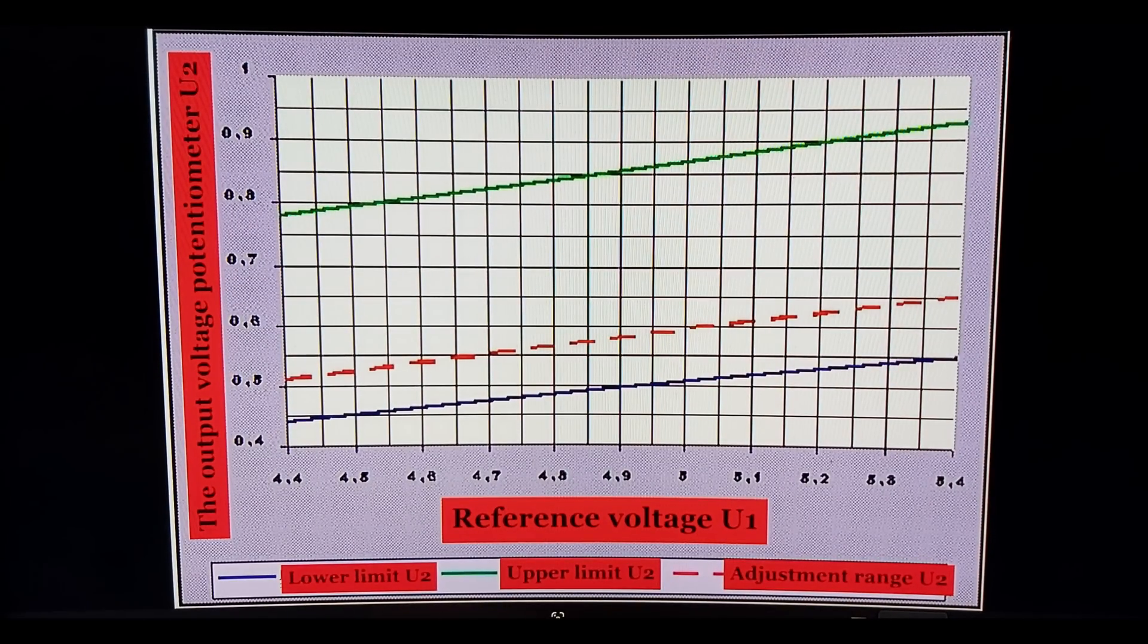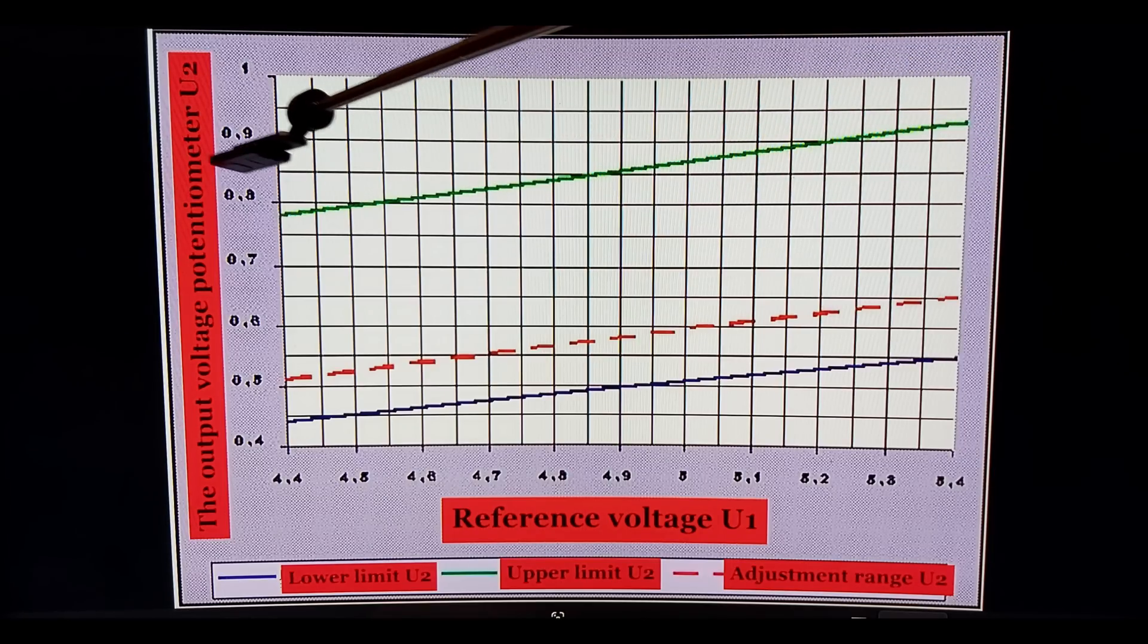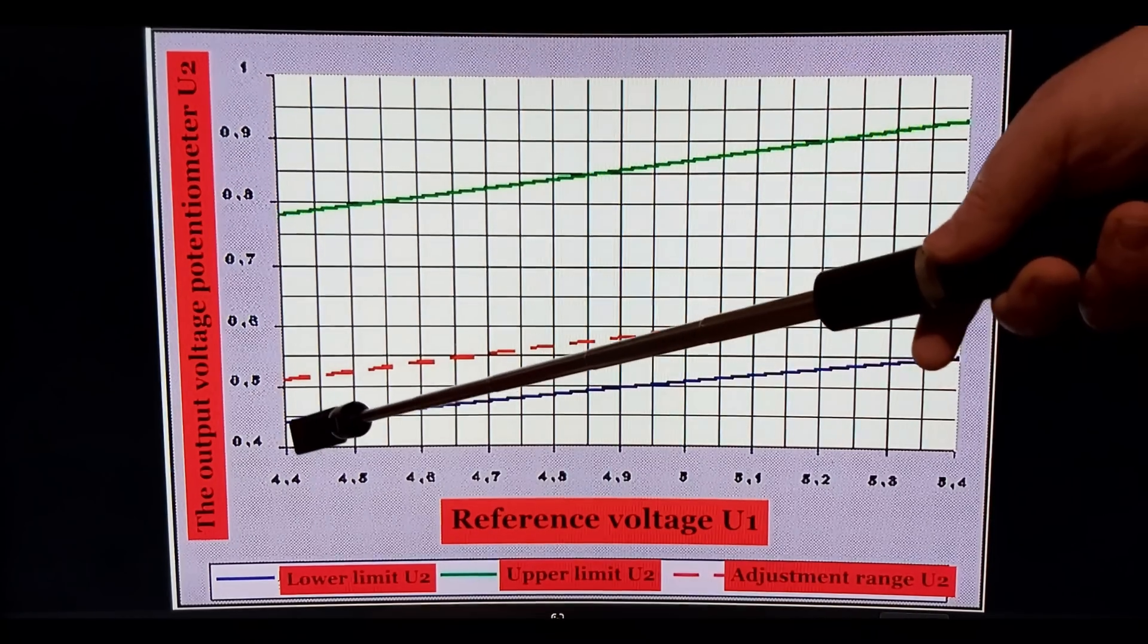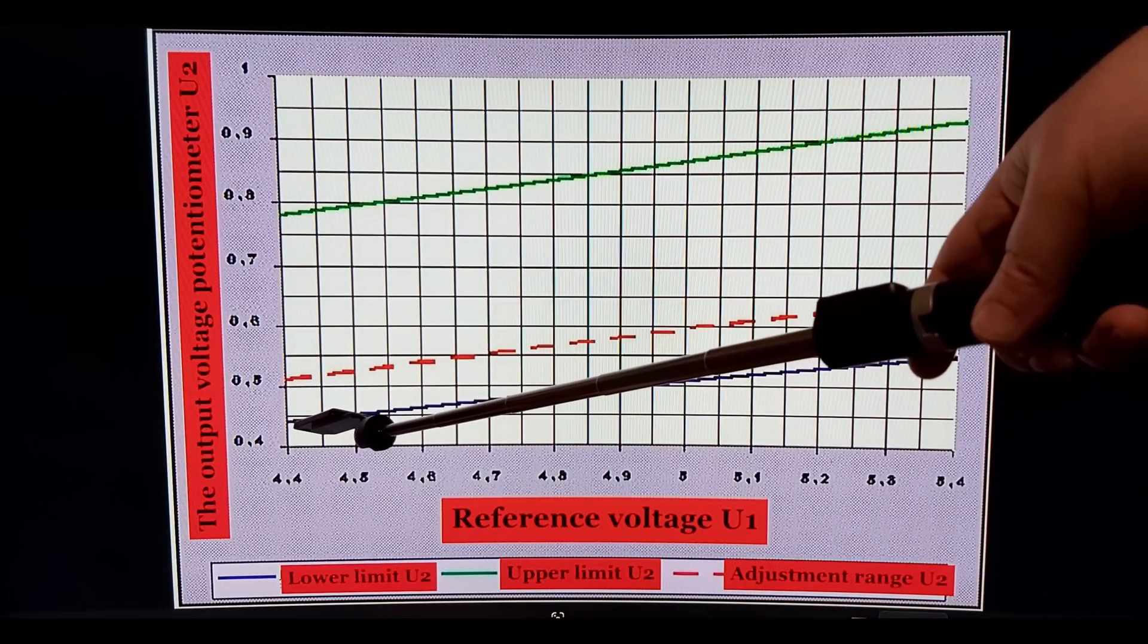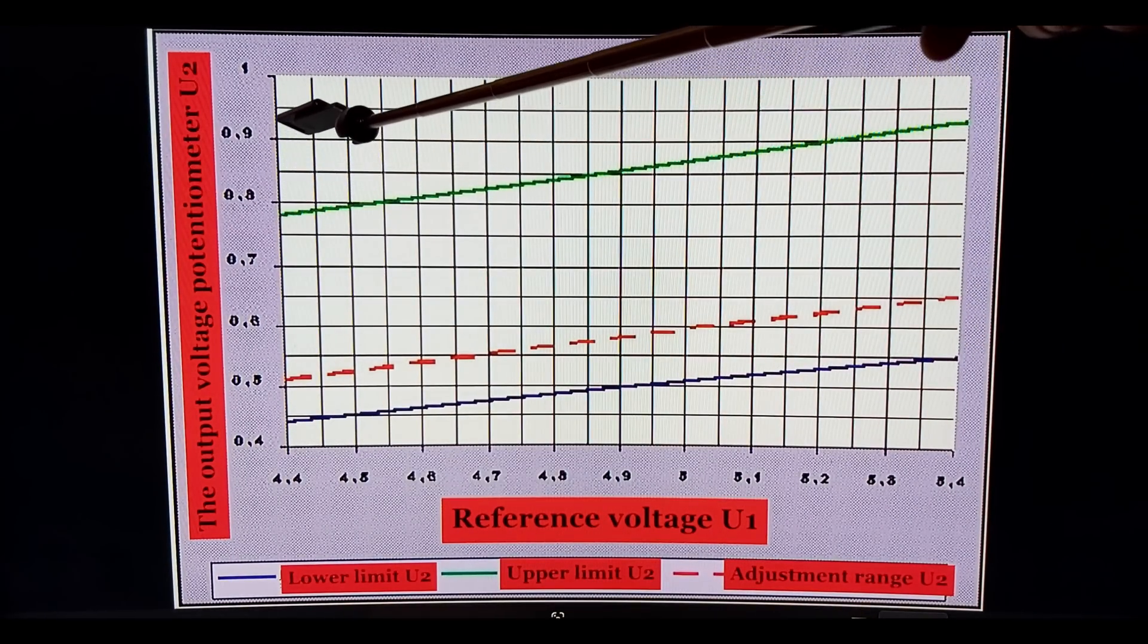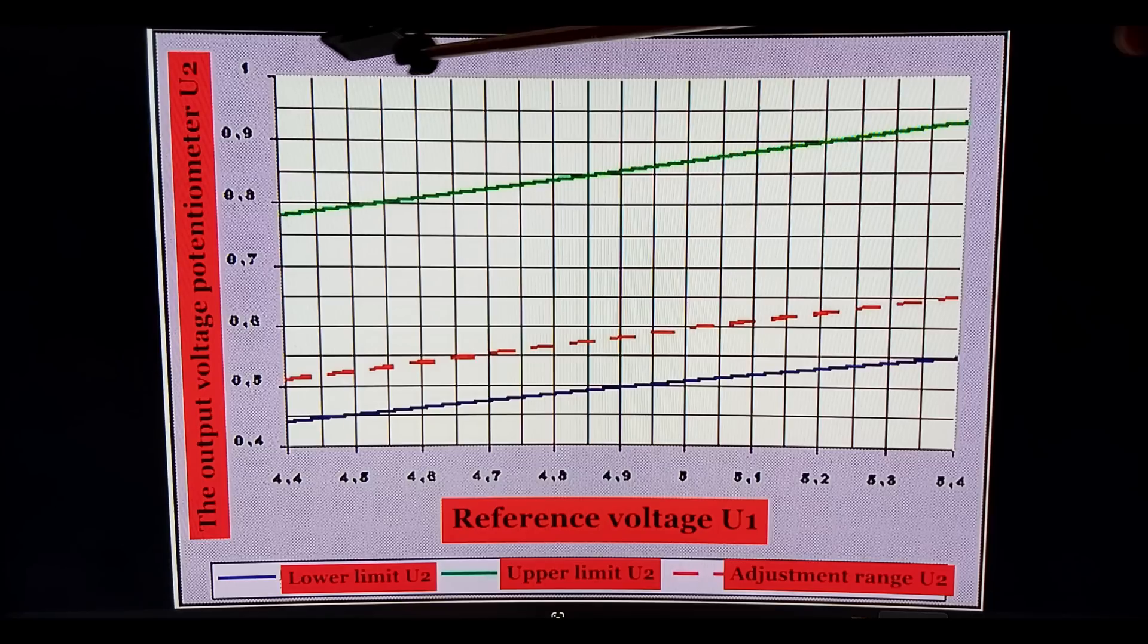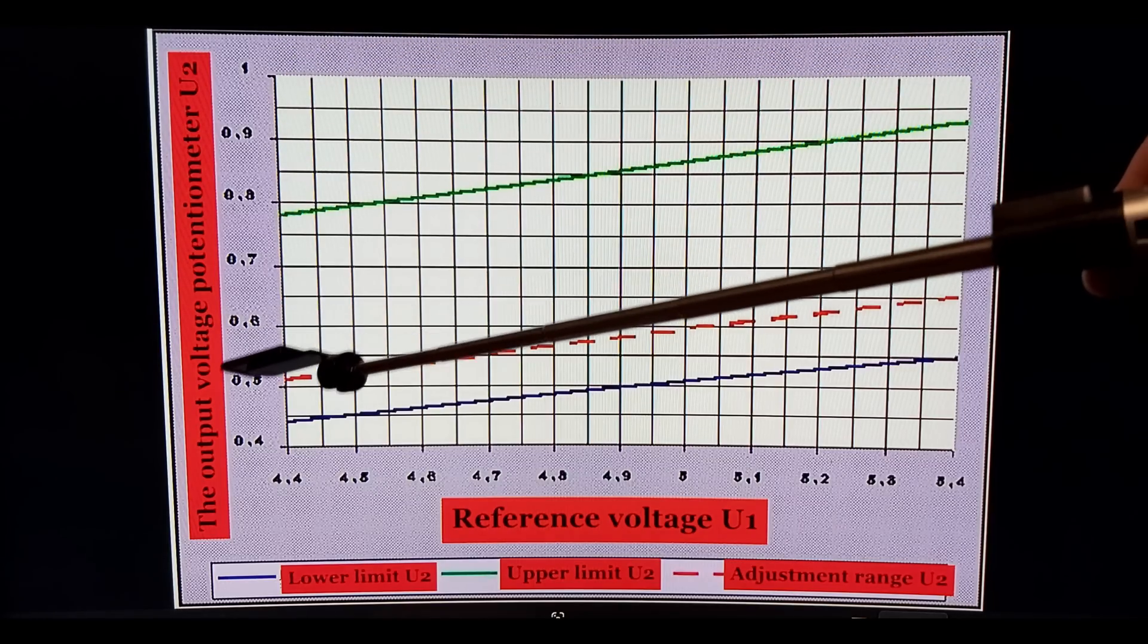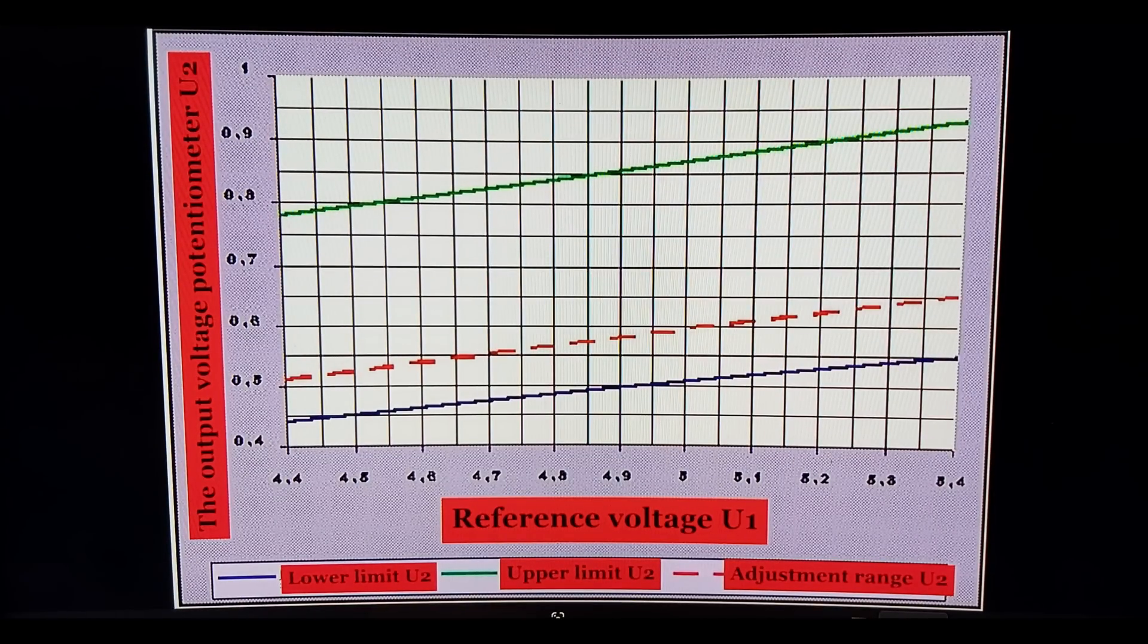So now, why do we actually adjust the voltage to be 0.7 volts? Because this is too low - extremely lean mixture. This here is extremely rich mixture.